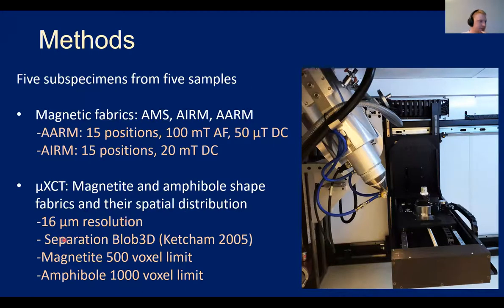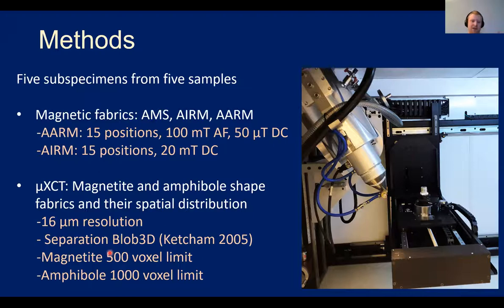I separated the crystals from the scans using the software Blob3D, setting a lower limit of 500 voxels as the minimum size for magnetite — to limit processing time and remove noise — and a minimum of 1000 voxels for amphibole.